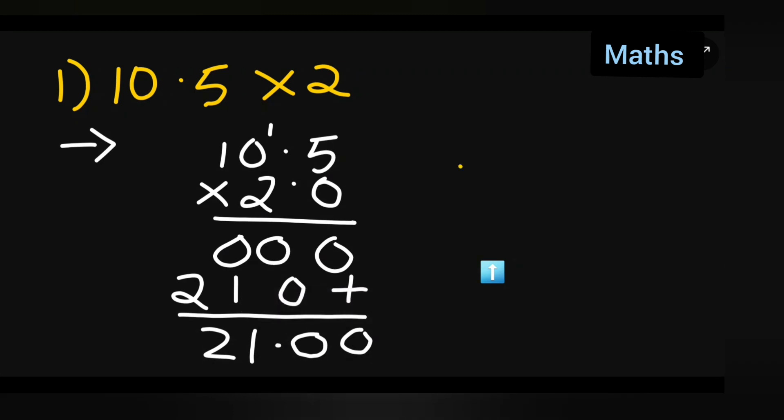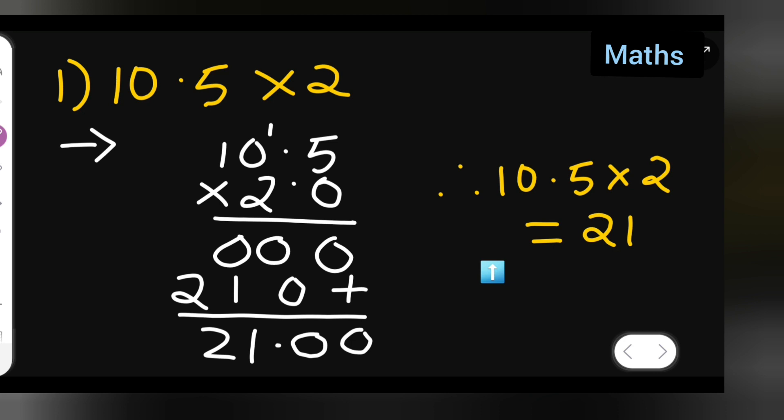Therefore, you can say that 10.5 multiplied by 2 is equal to 21, which is your answer. I hope you have understood how to multiply, especially when you have a decimal point. Thanks for watching! Don't forget to like, share, and subscribe. If you have any doubts or queries, you can comment below.